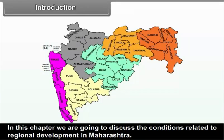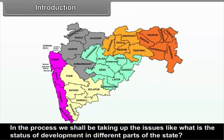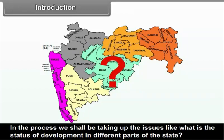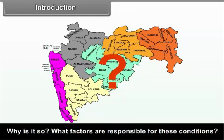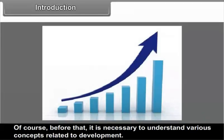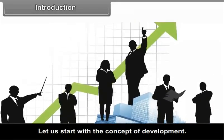In this chapter, we are going to discuss the conditions related to regional development in Maharashtra. In the process, we shall be taking up issues like: what is the status of development in different parts of the state? Why is it so? What factors are responsible for these conditions? Before that, it is necessary to understand various concepts related to development. Let us start with the concept of development.